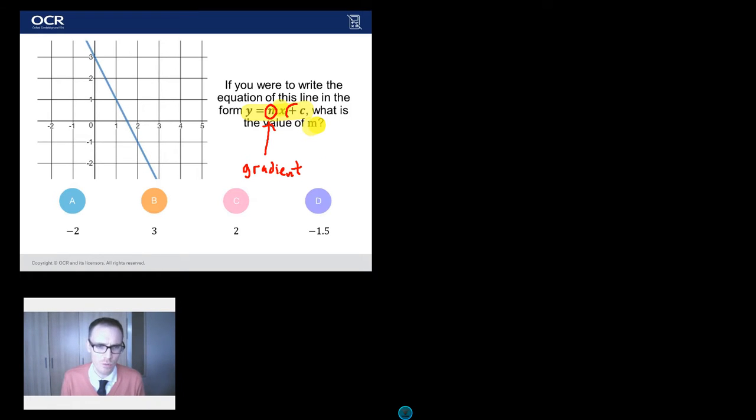And likewise, what is c? Well, c is the y-intercept. It is where your line crosses the y-axis, but again, only if it is written in the form y equals mx plus c. Right, we've established that. So, essentially, this question is saying, what is the value of the gradient?